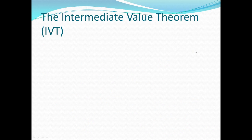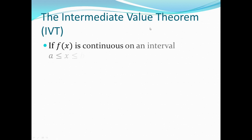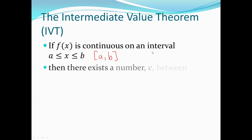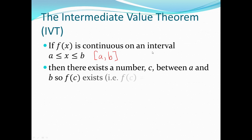One last theory for today is the intermediate value theorem. This theorem is easy to understand. Basically it says: if f of x is continuous on an interval a ≤ x ≤ b, then there exists some number c between a and b such that f of c exists. So if I know the function is continuous between a and b, then if I pick any number between a and b, the function is going to exist — f of c is going to equal some number.